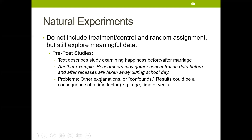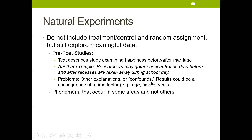These are called confounds — complications, other factors that could explain the result you've observed. But we can still have valuable insights from natural experiments that might lead us to design a true experiment.